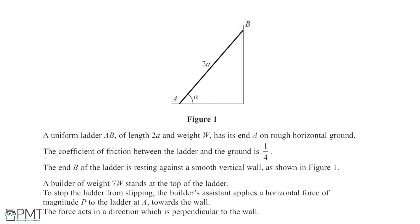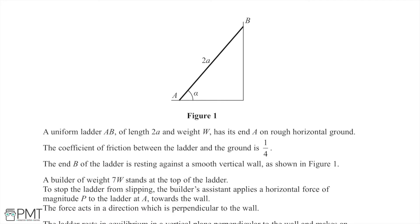A builder of weight 7w stands at the top of the ladder. To stop the ladder from slipping, the builder's assistant applies a horizontal force of magnitude p to the ladder at A. The force acts in the direction perpendicular to the wall, so we know that this force is acting away from the wall.